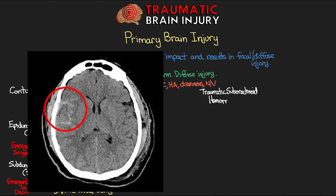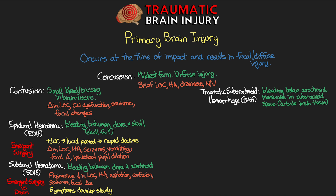The next bleed is something we call traumatic subarachnoid hemorrhage — bleeding below the subarachnoid membrane in the subarachnoid space, but still outside of the brain tissue. This is pathologically different than a subarachnoid hemorrhage that results from an aneurysm rupture, and in traumatic cases there often isn't any surgical intervention that can be done. A decreased level of consciousness in these trauma patients is associated with a poor prognosis. Given the nature of the space in which this bleeding occurs, it may also present with an intraventricular hemorrhage. Symptoms include changes in level of consciousness, a headache often described as the worst headache of their life, confusion, seizures, and focal deficits.